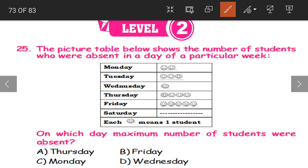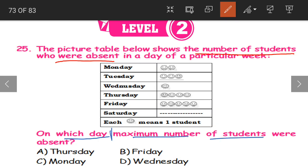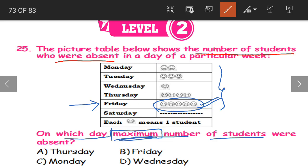Question 25. The picture table shows the number of students who were absent each day of a particular week. On which day were the maximum number of students absent? Maximum means the highest. Just by looking at the table, Friday has the most smileys, so Friday had the maximum number of absent students. Our answer is option B.